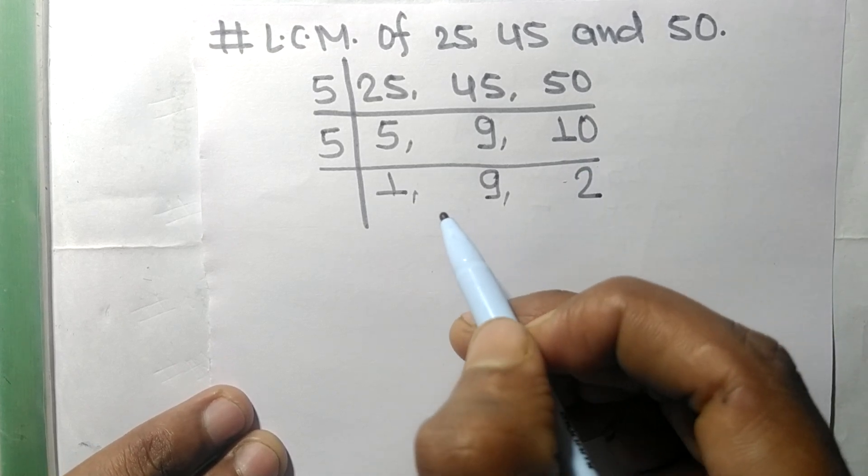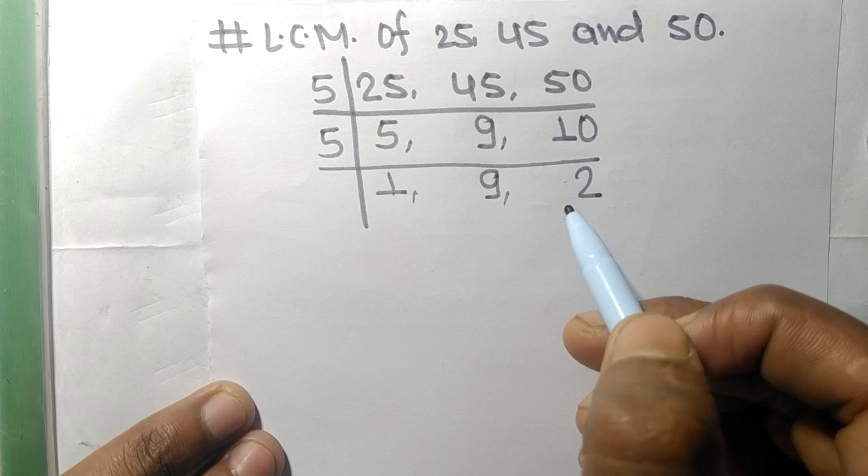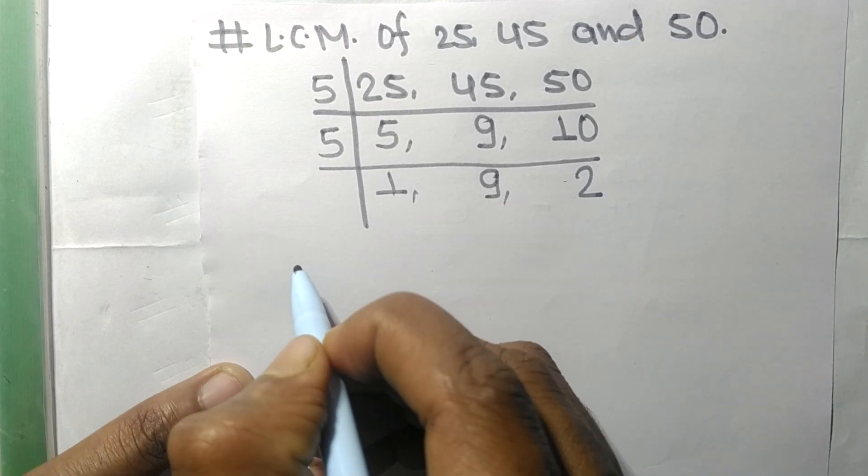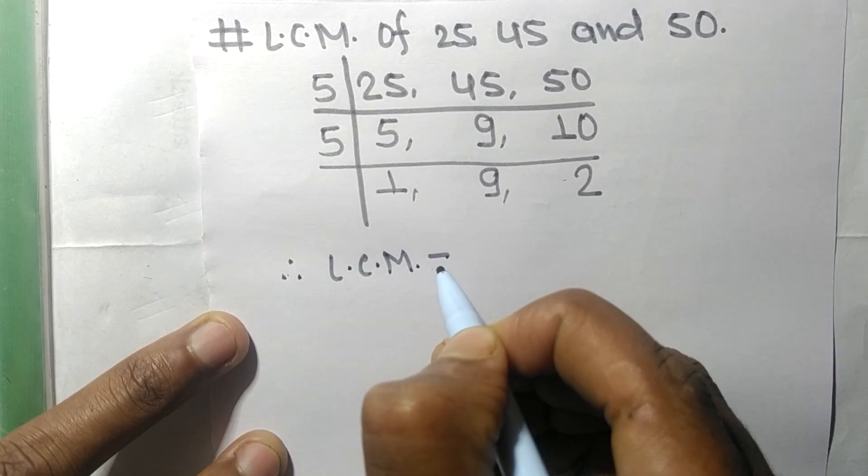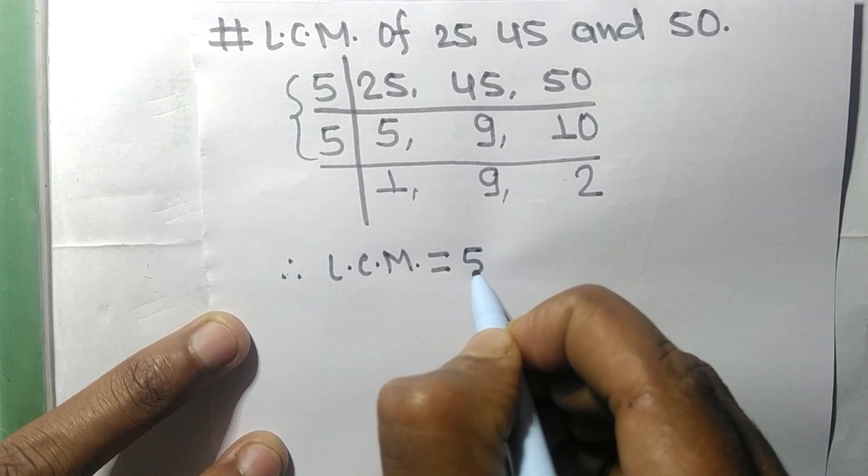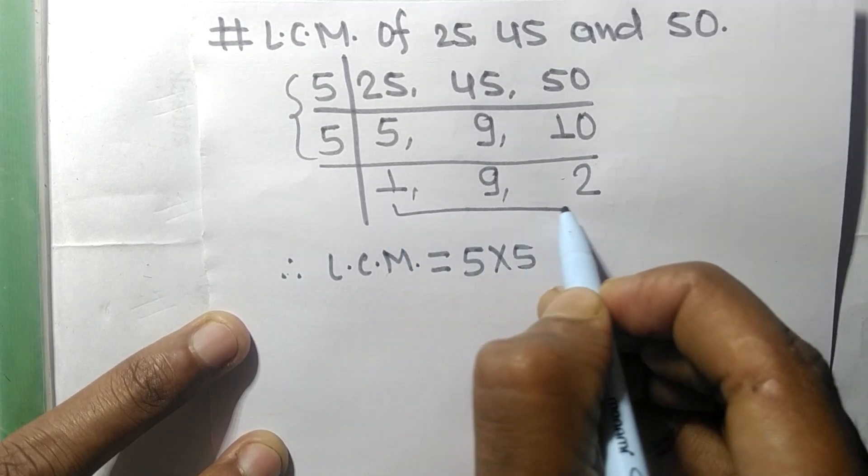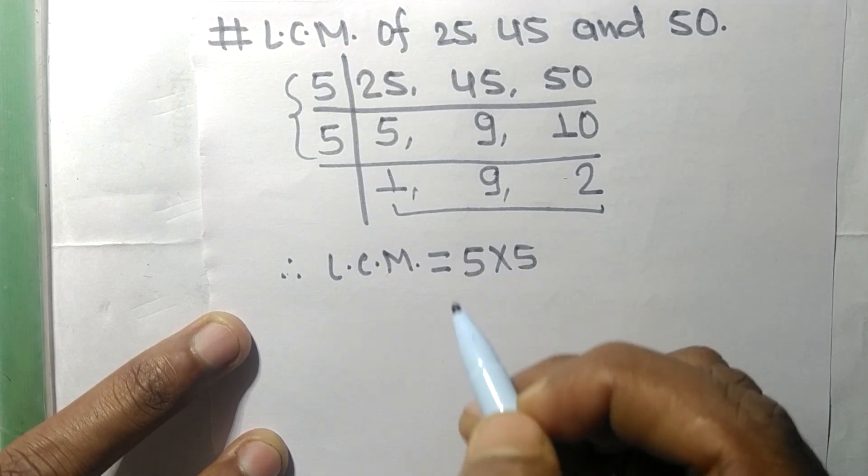Now the numbers 1, 9, and 2 are not exactly divisible by the same number. Therefore, the LCM is equal to, from this side it is 5 times 5, and from this side we choose the numbers greater than 1, that is 9 and 2.